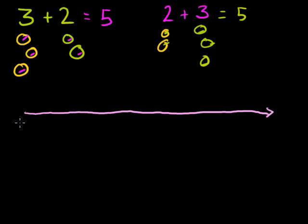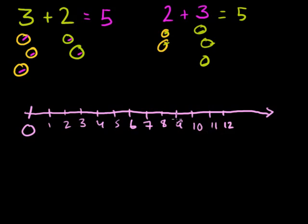So 0 means nothing. If I have 0 lemons, it means I have no lemons. So 0, 1, 2, 3, 4, 5, 6, 7, 8, 9, 10, 11. Let's go pretty high: 12, that way I can reuse the number line, 13, 14. I could keep on going, but maybe 14 will be enough for this video.